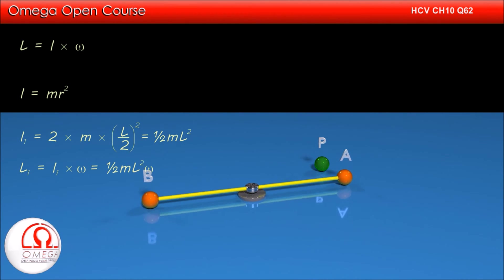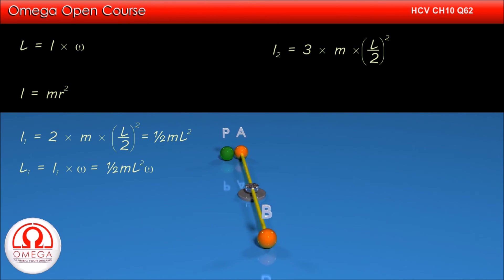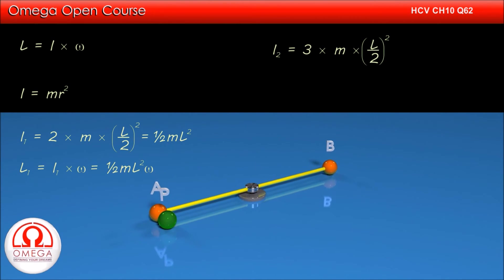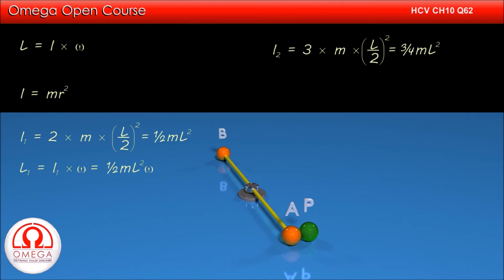Since after the collision, the particle and both the balls are moving, the moment of inertia of the system is 3 times M times (L/2) squared, or 3ML squared by 4.